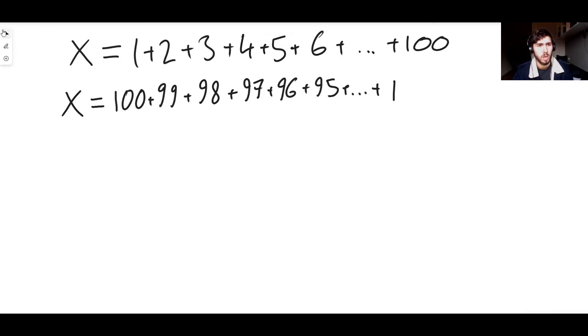This is the really cool thing that Gauss realized as a five-year-old allegedly. He realized that if you add the top equation to the bottom equation, something very cool happens. So x plus x, that's the left-hand side, we get 2 lots of x. We're going to add these equations up, and on the right-hand side we're simply going to add each term individually: 1 plus 100, 2 plus 99, 3 plus 98.